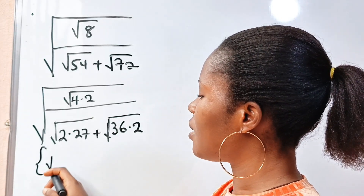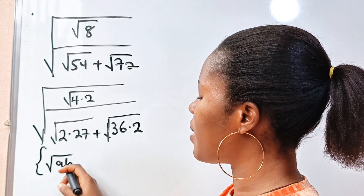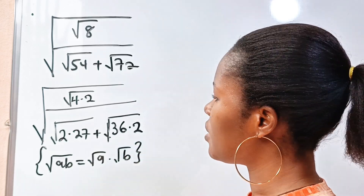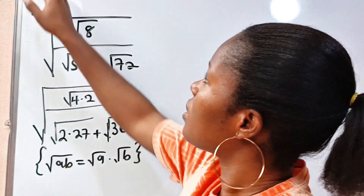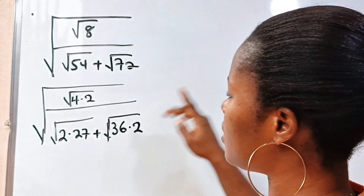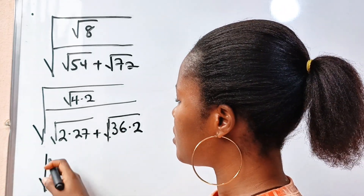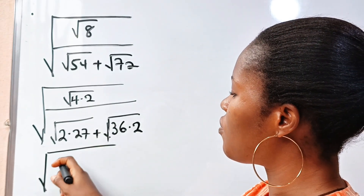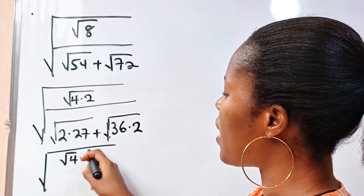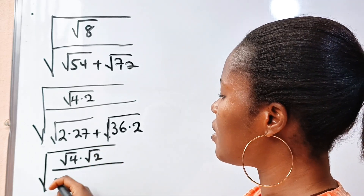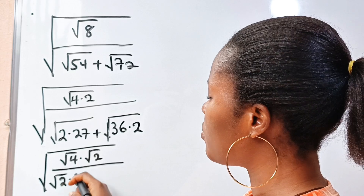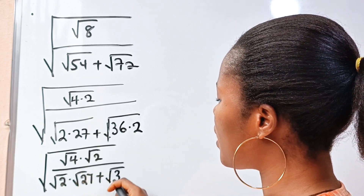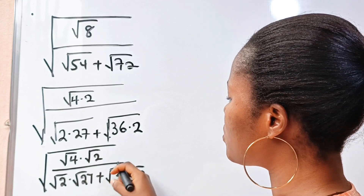Now, remember that square root of a multiplied by b is equal to square root of a multiplied by square root of b. So that means we can write this as square root of 4 multiplied by square root of 2, divided by square root of 2 multiplied by square root of 27, plus square root of 36 multiplied by square root of 2.